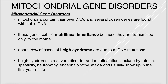Mitochondria have their own DNA with about 35 to 40 genes. Mitochondrial DNA is inherited only from the mother — called matrilineal inheritance. Mutations in mitochondrial DNA cause problems with energy (ATP) production and tend to show up in the brain and muscles, areas that use lots of energy. Examples include Leigh syndrome and MELAS.